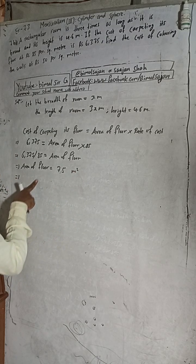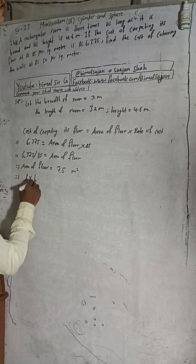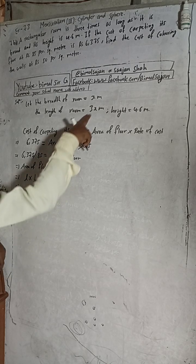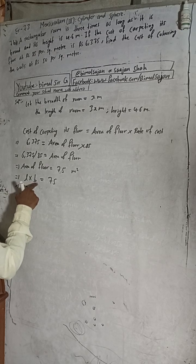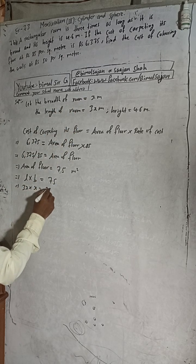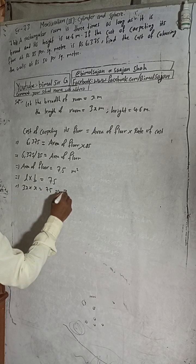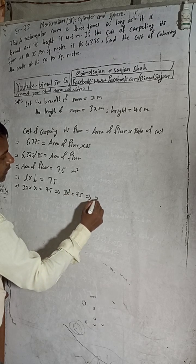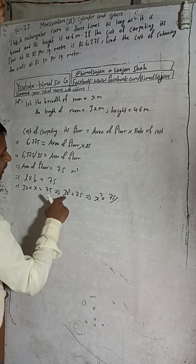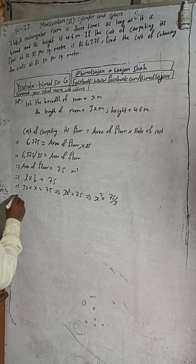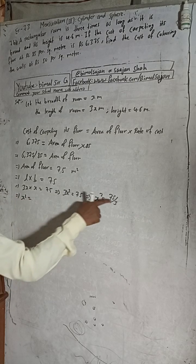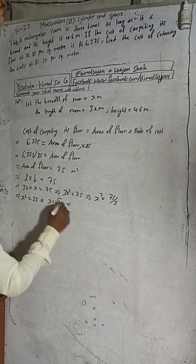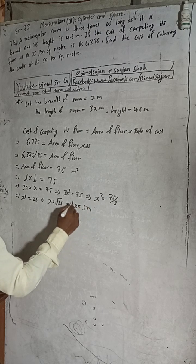Area of floor equals 75. Length into breadth equals 75. The length value is 3x and the breadth value is x, so 3x times x equals 75. This gives 3x² equals 75. Therefore x² equals 75 divided by 3, which equals 25. So x equals the square root of 25, which equals 5 meters. So breadth equals 5 meters.